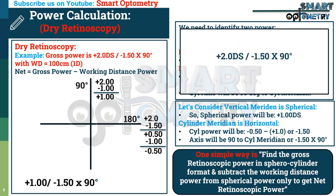For example, gross retinoscopic power was plus 2 minus 1.5 axis 90°. We can easily get the net retinoscopic power by subtracting working distance power from the spherical power only, giving plus 1 minus 1.5 axis 90°.